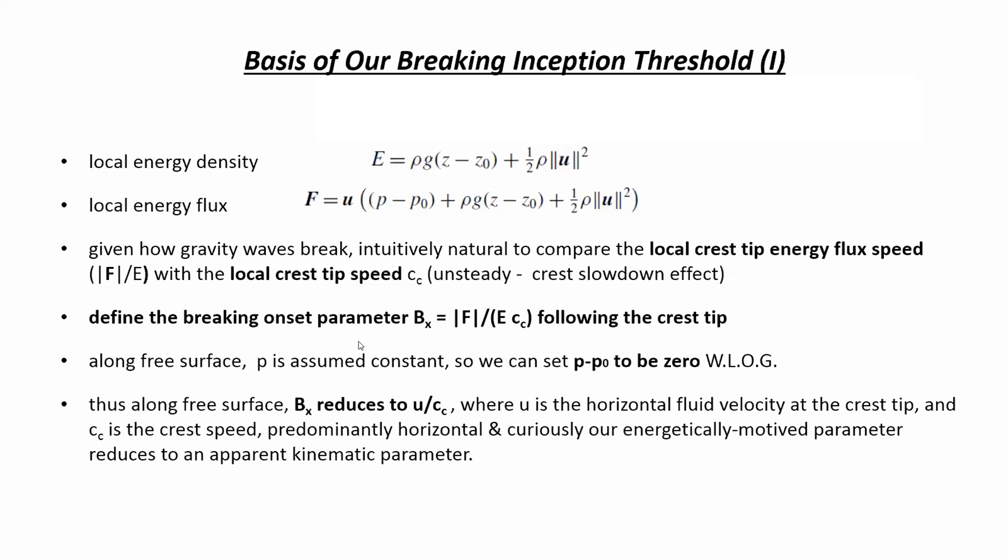We define a very innocent looking parameter: the ratio of this energy flux velocity F over E, mod F over E because F is a vector, divided by, normalized by the crest speed. Following the crest tip on the free surface, which is assumed constant, p_0 is just a reference constant anyway. We can take this whole thing to be zero without losing generality because a constant pressure field through the whole fluid makes no difference to the dynamics. Along the free surface, then B_x just reduces to the speed of the fluid divided by this fluctuating or dynamically changing crest speed.